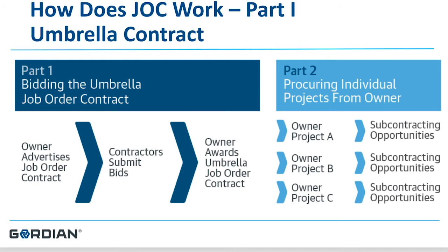When an owner would like to engage with the job order contract, they simply alert their contractor to the fact that there is a project. The contractor looks at the project with the owner and any subcontractors that may be involved. The contractor takes thorough time to examine the scope of work and any contract drawings, then returns to their office and uses Gordian's system, which gives them electronic access to the construction task catalog.